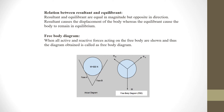We will see the relation between resultant and equilibrium. Resultant and equilibrium are equal in magnitude but opposite in direction, as we have seen in the previous chapter. Resultant causes displacement of the body whereas equilibrium causes the body to remain in equilibrium.